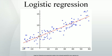A word of caution is in order when interpreting pseudo-R² statistics. The reason these indices of fit are referred to as pseudo-R² is because they do not represent the proportionate reduction in error as the R² in linear regression does. Linear regression assumes homoscedasticity — that the error variance is the same for all values of the criterion. Logistic regression will always be heteroscedastic — the error variances differ for each value of the predicted score. For each value of the predicted score there would be a different value of the proportionate reduction in error. Therefore, it is inappropriate to think of R² as a proportionate reduction in error in a universal sense in logistic regression. The Hosmer–Lemeshow test uses a test statistic that asymptotically follows a chi-squared distribution to assess whether or not the observed event rates match expected event rates in subgroups of the model population.